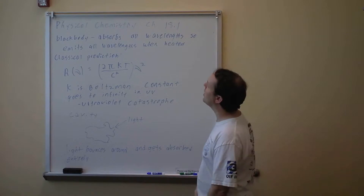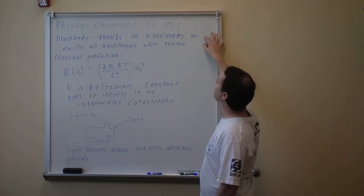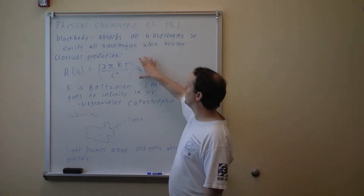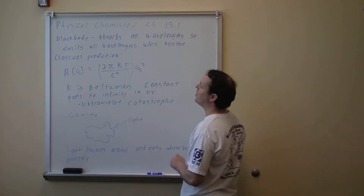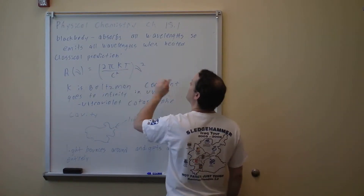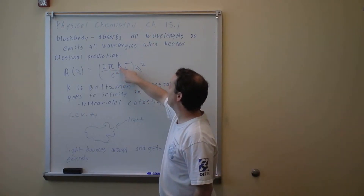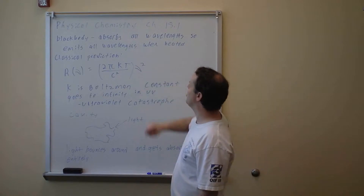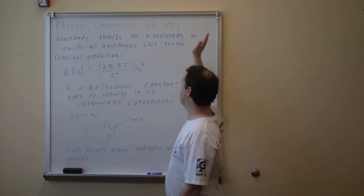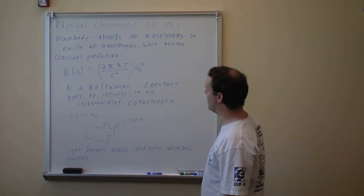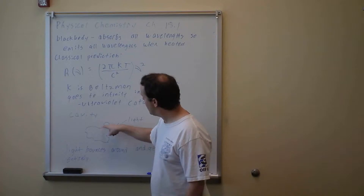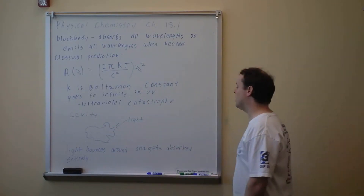Continuing on Physical Chemistry, Chapter 18, Section 1 — we're talking about a black body. A black body absorbs all wavelengths, that's why it looks black. Therefore when you heat it up, it also emits all wavelengths. This is the classical prediction: if you take the laws of classical physics and try to derive black body radiation, you get R(nu) = 2πkT/c² × ν². Here k is Boltzmann's constant, T is absolute temperature, c is the speed of light, and nu is frequency. This goes up and up with higher frequency until it reaches infinity in the ultraviolet — the ultraviolet catastrophe. A black body is basically a hollow cavity; light comes in through a tiny hole, keeps bouncing around, and eventually gets absorbed entirely.